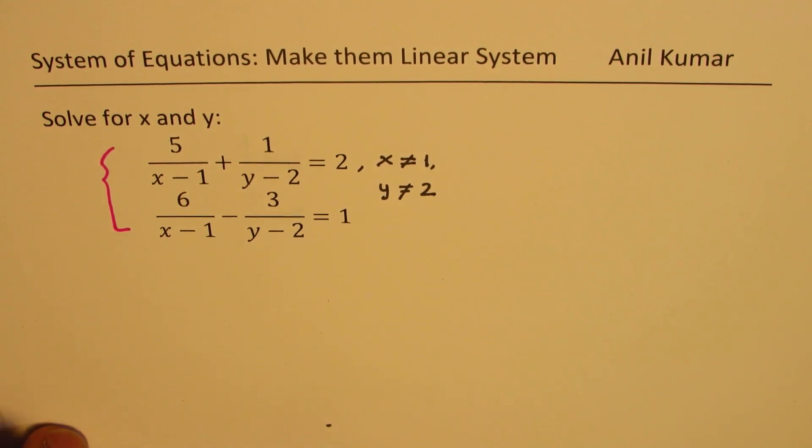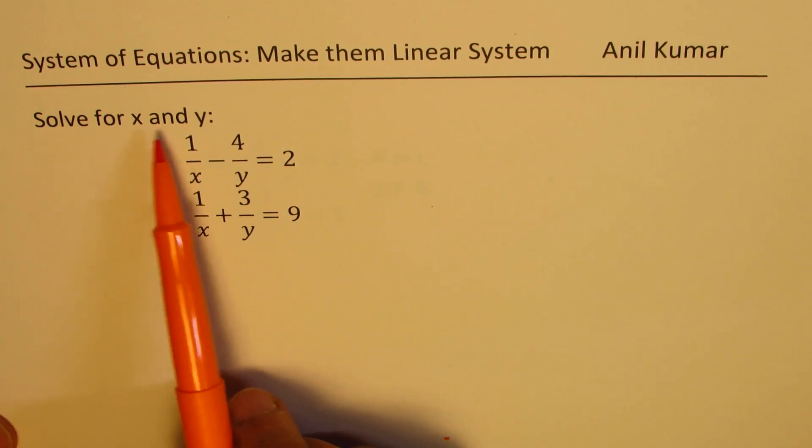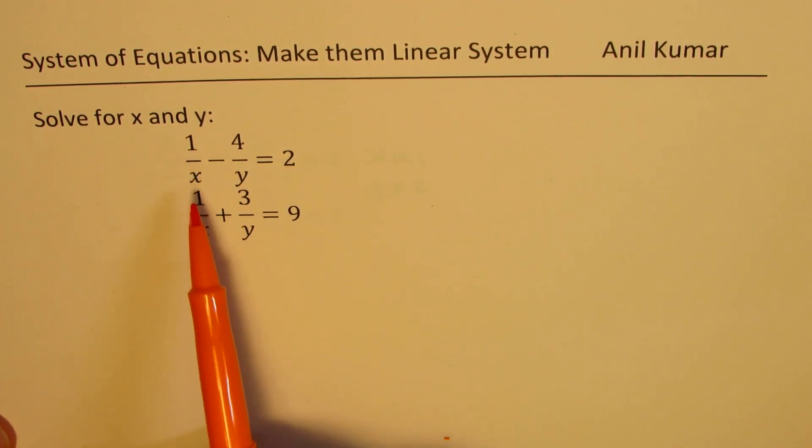Now we have a very similar example which we'll do first and then take up this one. So let us see how to solve a simpler question and then we'll take up our first question. We need to solve for x and y when 1 over x minus 4 over y equals 2, and 1 over x plus 3 over y equals 9.